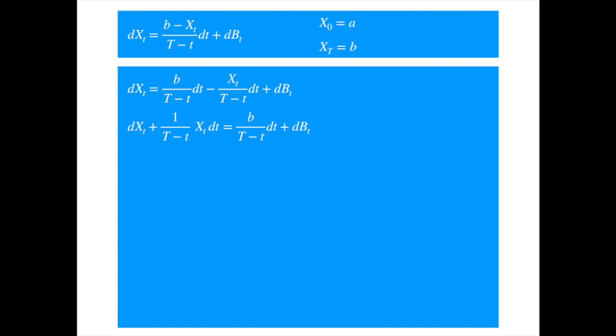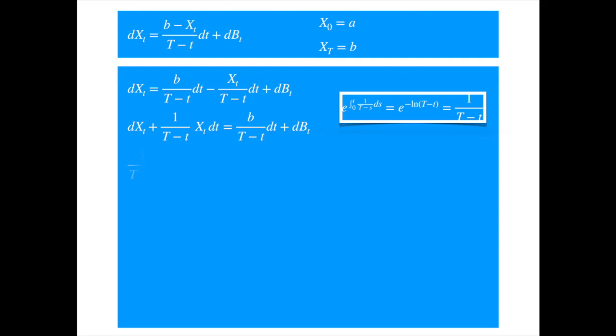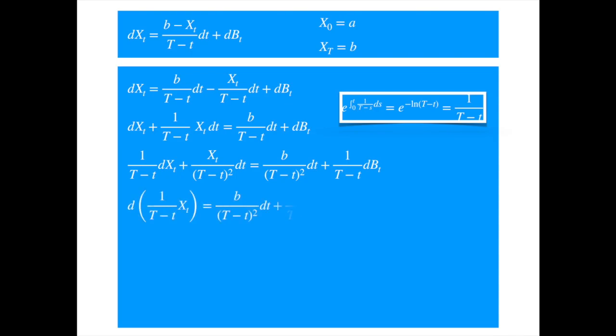Let's proceed as we did in the previous video. We expand the first term, and then move X to the left-hand side. The form of the equation suggests that we should try to find an integrating factor that would make the left-hand side an exact differential. We know how to find the integrating factor: we just exponentiate the integral of the coefficient of X, multiplying through by the integrating factor.